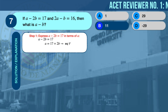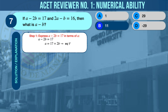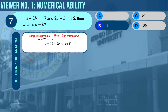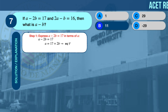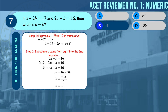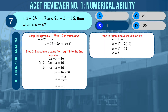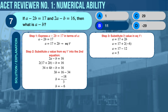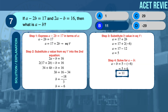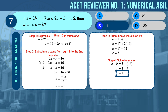The correct answer is B, 11. To solve this problem, first express the equation a − 2b = 17 in terms of a. We arrive at a = 17 + 2b — let's call this Equation 1 Prime. Next, substitute the value of a from Equation 1 Prime into the second equation. We arrive at b = −6. Then substitute the computed value of b into Equation 1 Prime to get a = 5. With the values of a and b known, we solve for a − b. The correct answer is 11.